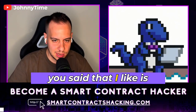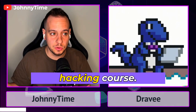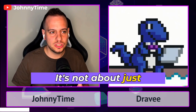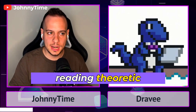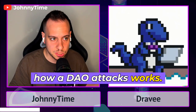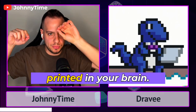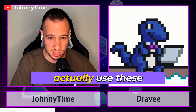Another alpha tip: don't just go and read reports — be active. This is something I always advocate for my students. This is how I built my smart contract hacking course. It's not about just reading reports or reading theoretical attacks of how reentrancy works or how a DAO attack works. You really need to take action, because this is how your brain is going to memorize things and print these skills so you can actually use them.